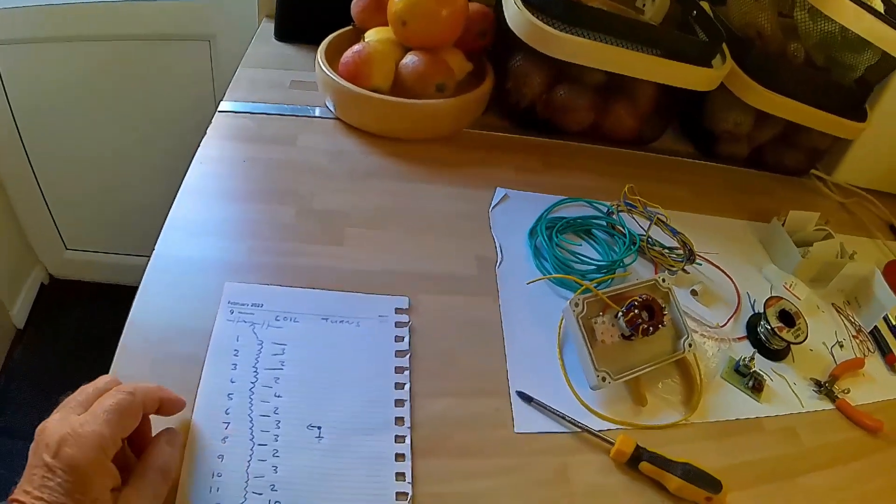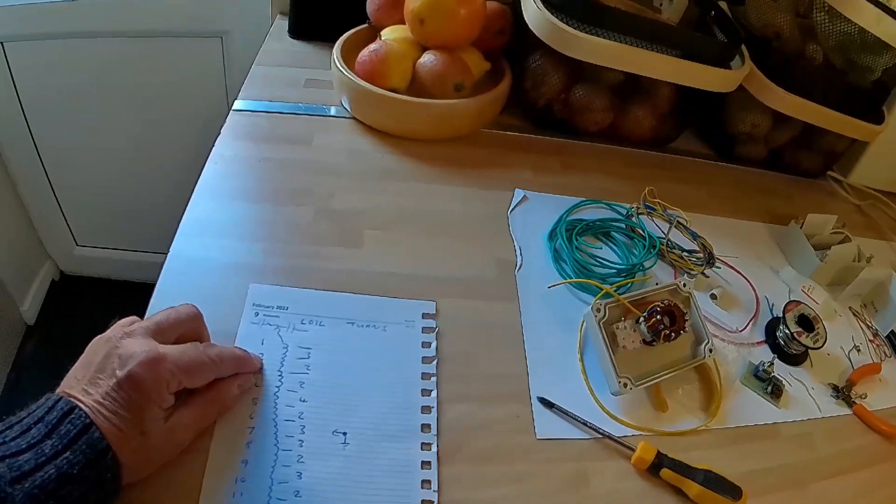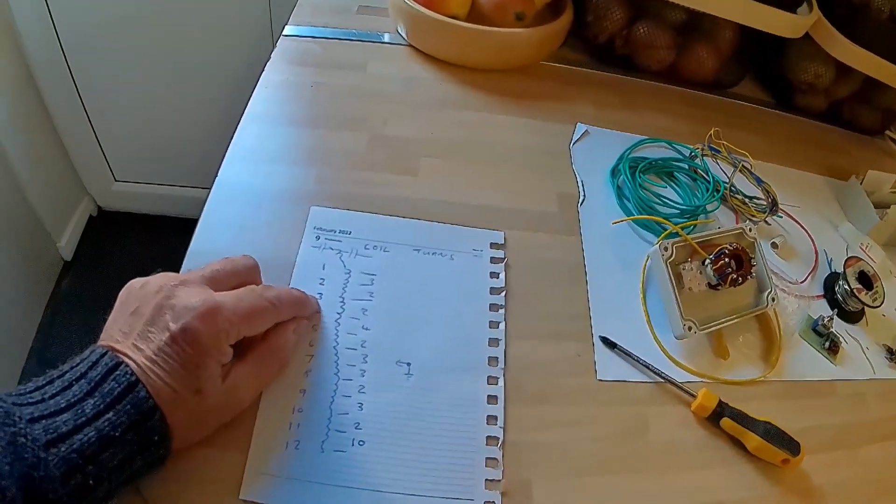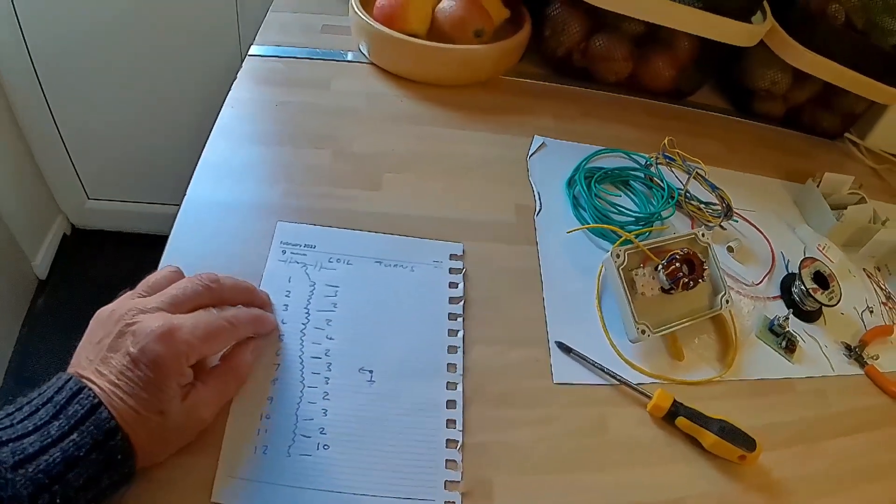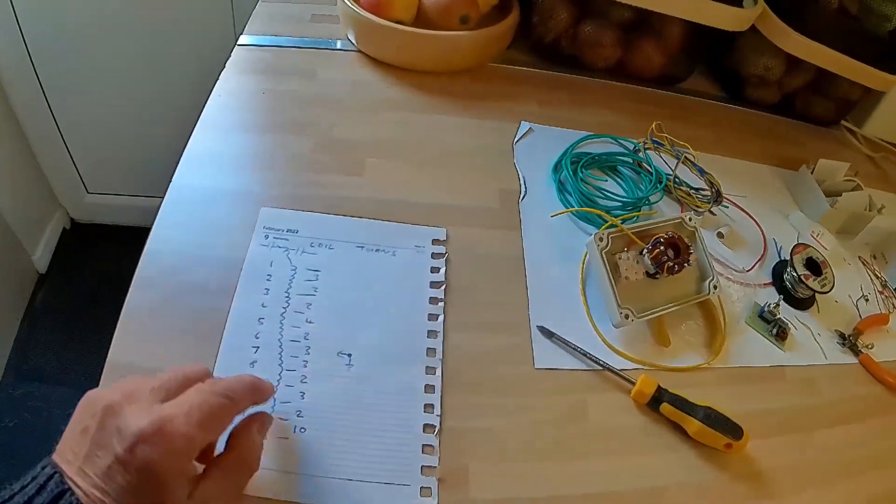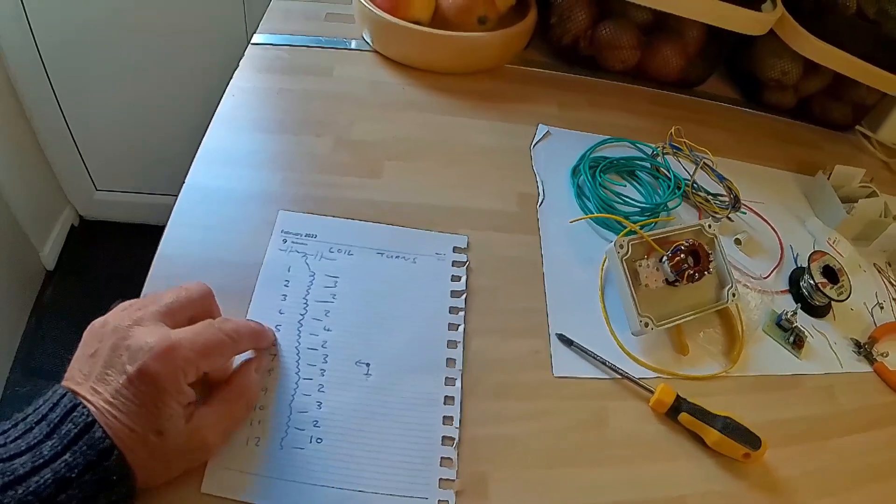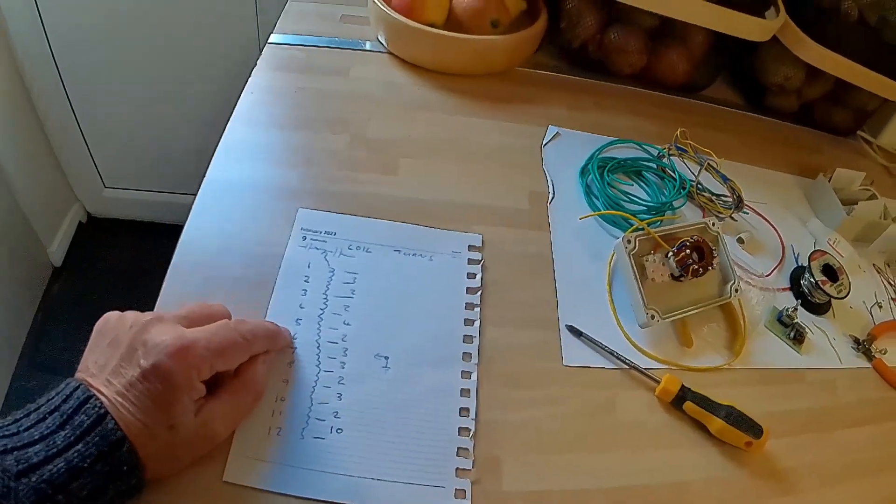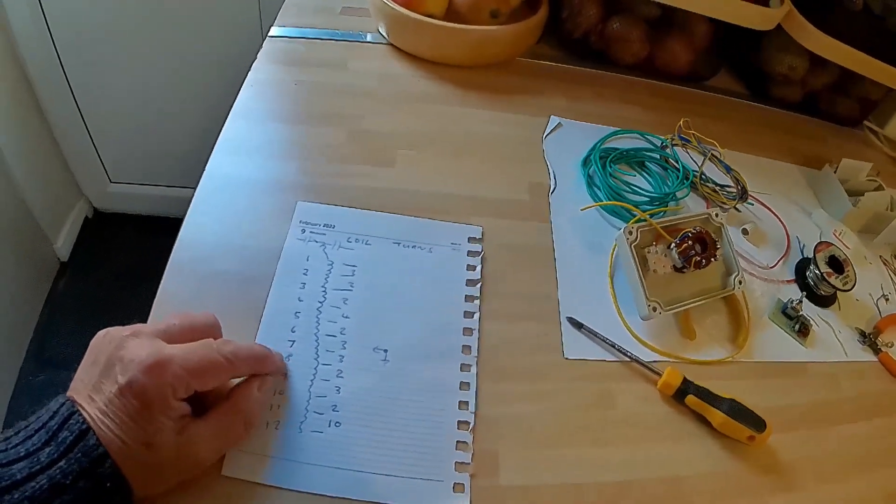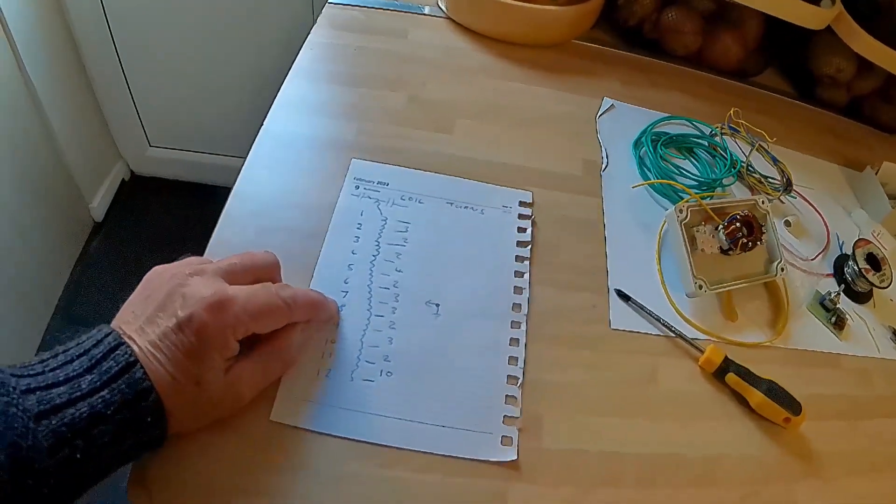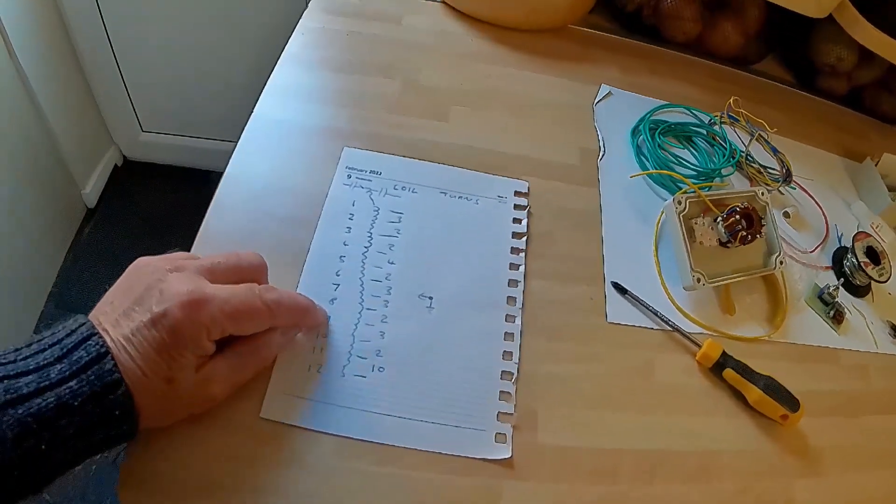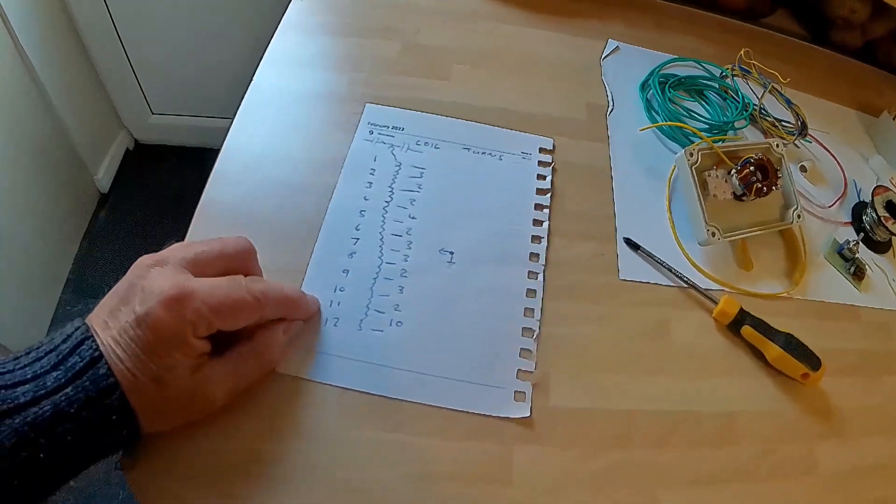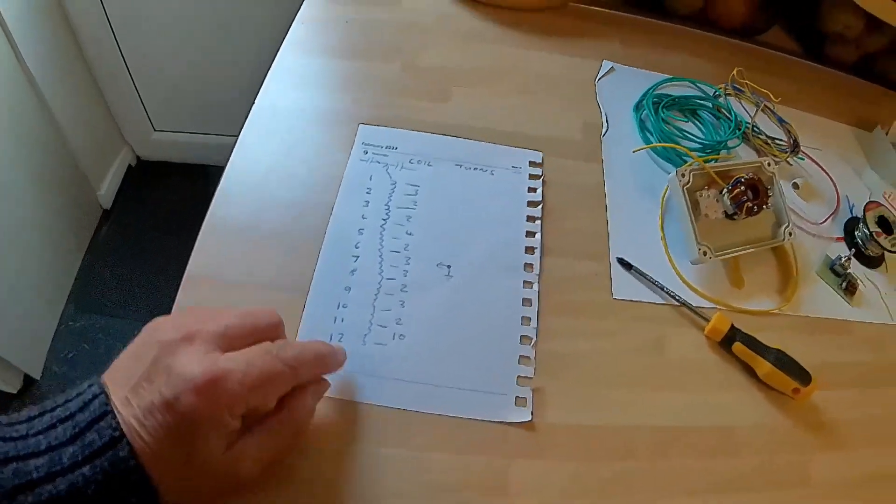So between, this is the switch numbering. Between pins 1 and 2 on the switch it has 2 turns. Between pin 2 and pin 3 it has 2 turns. Between pin 3 and 4, 2 turns. Between 4 and 5 it's 4 turns. Between 5 and 6 it's 2 turns. Between 6 and 7, 3 turns. 7 and 8, 3 turns. Pin 8 to 9, 2 turns. Pin 9 to 10, 3 turns. Pin 10 to 11, 2 turns. And finally pin 11 on the switch to pin 12, 10 turns.